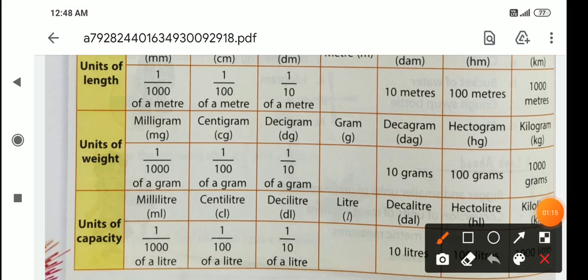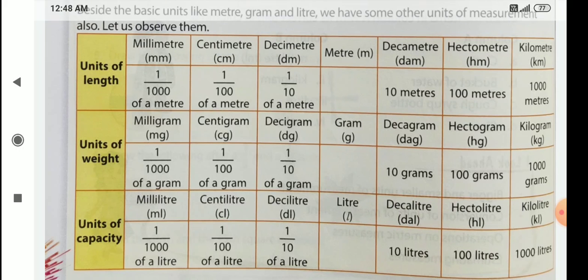Here, these are the basic units. For length, meter is the basic unit. For weight, gram is the basic unit. And for capacity, liter is the basic unit. So in the right side, higher units are given and the left side, lower units are given.